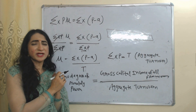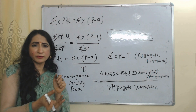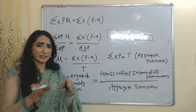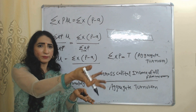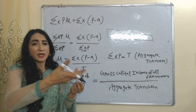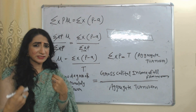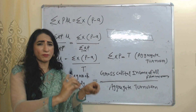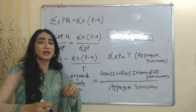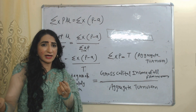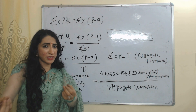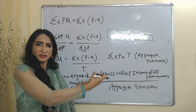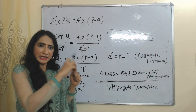If we have more monopoly power, that means we are facing very few competitors in the market, and that's why we can set a higher price — eventually earning a higher profit margin. On the other hand, if we have very little monopoly power, we are facing so much competition in the market, we have to set a lower price, and eventually our profit margin will become very low.